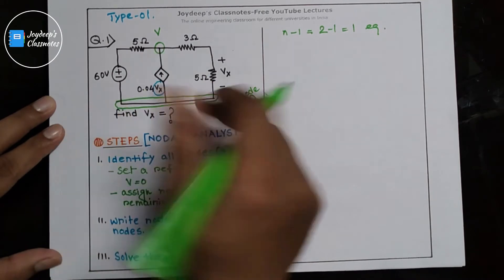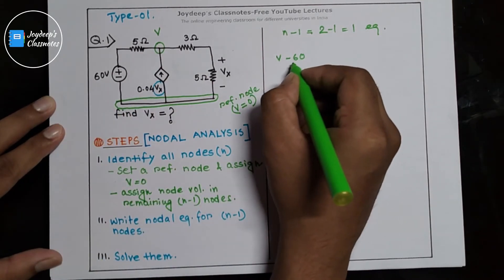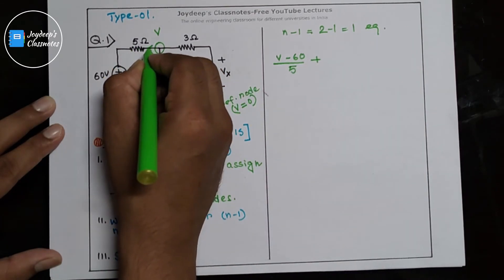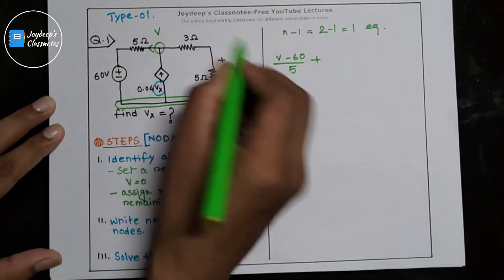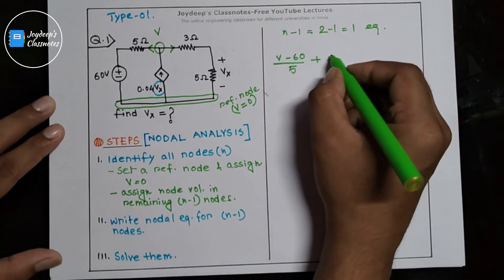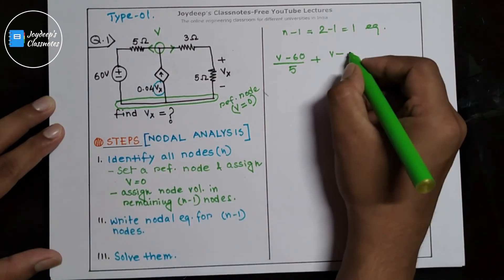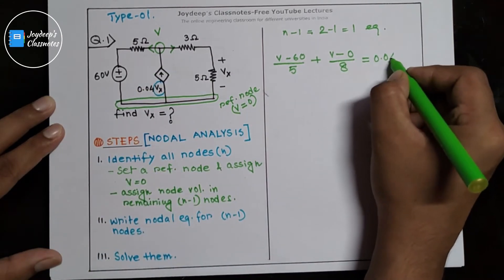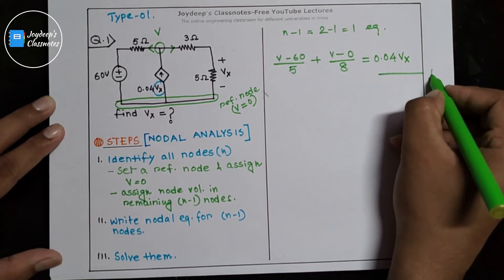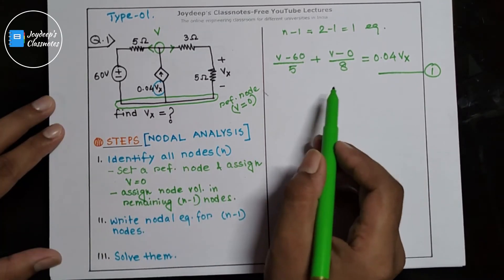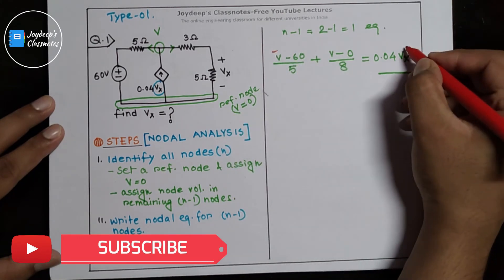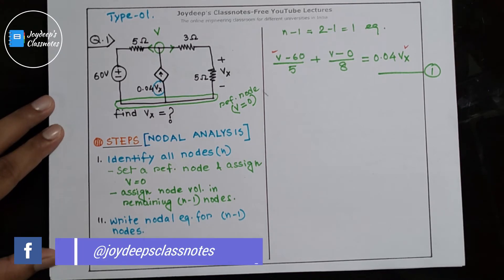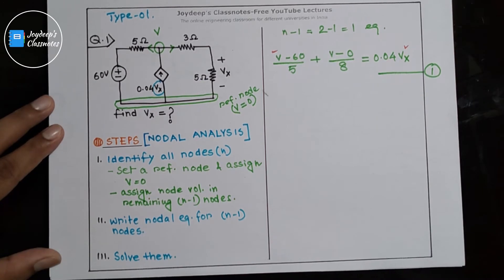Applying KCL at this node: (V minus 60) divided by 5, plus V divided by 8, equals 0.04 Vx, because this is an incoming current. This is the only equation. We can see it has two variables: V and Vx. By solving only one equation, we can't find out two variables. So somehow we need to express one variable in terms of the other.